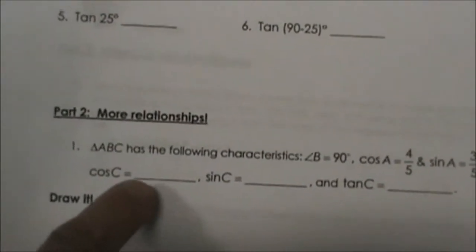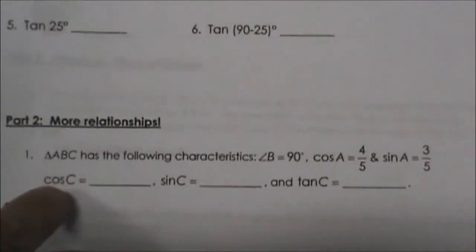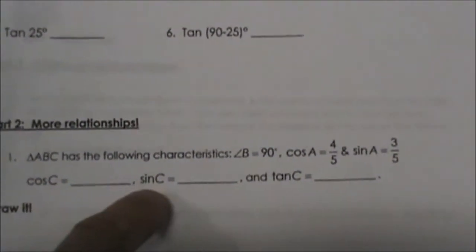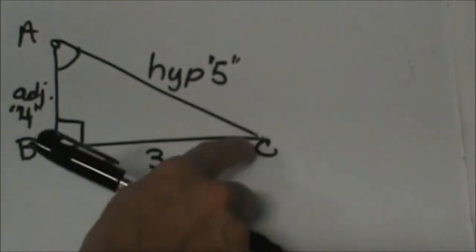Now we are going to go through and find the cosine of C, the sine of C, and the tangent of C. Now we are going to change our perspective and look from angle C.